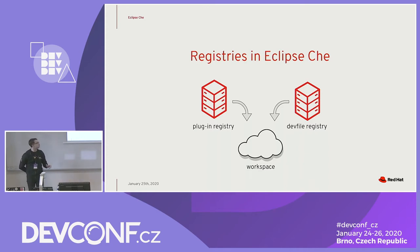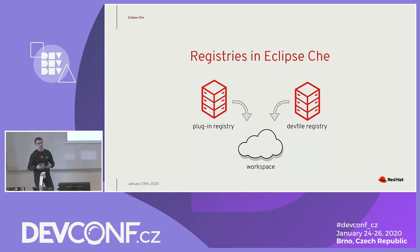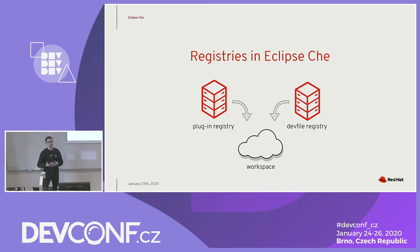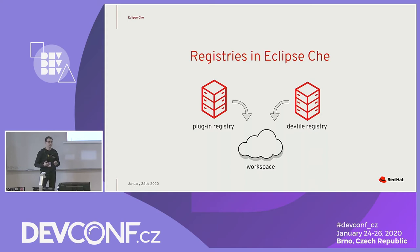Che also has two registries. The first is a plugin registry and the second is a devfile registry. In the devfile registry you register your devfiles, and Che already has its own devfile registry with devfiles for Python, C#, Go, Java, Node.js, and C++. Each devfile references plugins living in the plugin registry. A Che plugin is like a YAML file that wraps a VS Code extension or Theia plugin, and one Che plugin can contain more than one VS Code extension. For example, the Java plugin contains two extensions: a Java language server and a Java debugger provided by Microsoft.